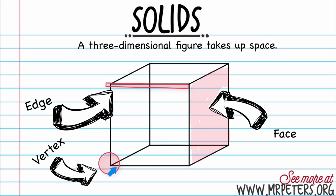And finally, we have our face. Faces are the sides of the three-dimensional figure. So in this case, if you think of a cube, we have six sides — just like dice, you have six sides. On a cube you have six sides: one, two, three, four, and then the top and bottom with five and six.